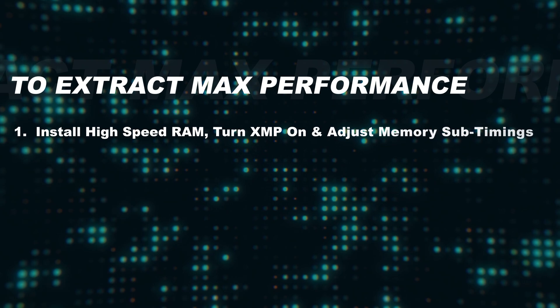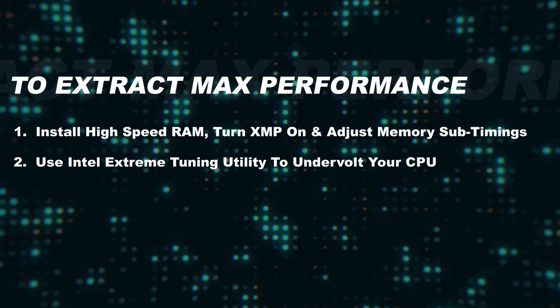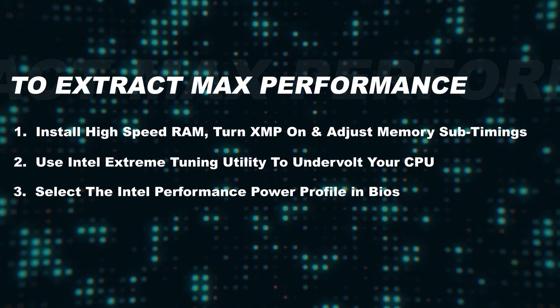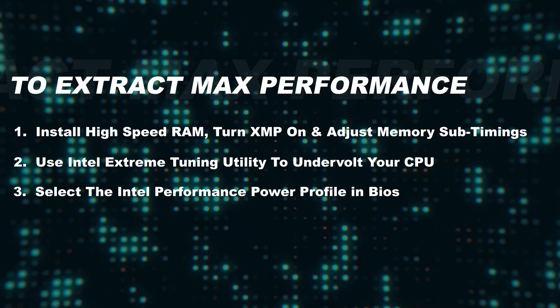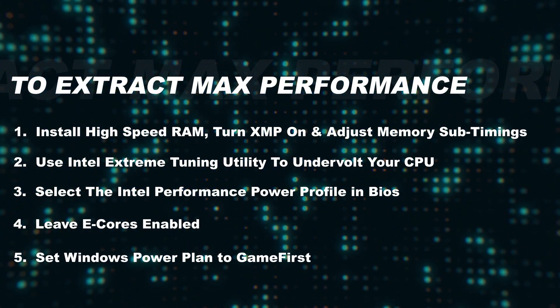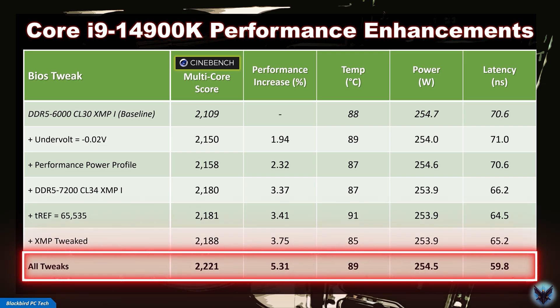In summary, the tweaks I recommend to extract max performance from your Intel Raptor Lake CPU are: 1. Install high-speed RAM, turn XMP on, and adjust your memory sub-timings. 2. Use the Intel Extreme Tuning Utility to undervolt your CPU. 3. Select the Intel performance power profile in BIOS. 4. Leave the E cores enabled. 5. Set the Windows power plan to Game Turbo. The impact of these tweaks is summarized in a table, starting with the lowest impact and ending with the largest. When implemented together, the boost in performance is greater than 5%.